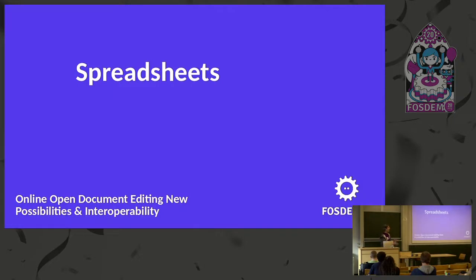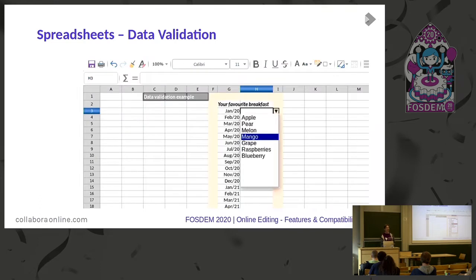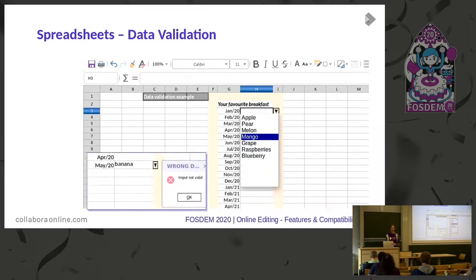The next thing is about spreadsheets, which are often used. Cell protection: if you try to change something that's protected, it will just fail and you will get notified. Data validation — most people know it — for those working with spreadsheets online, it's just available. And if you try to do things that are not allowed, again you will be notified.